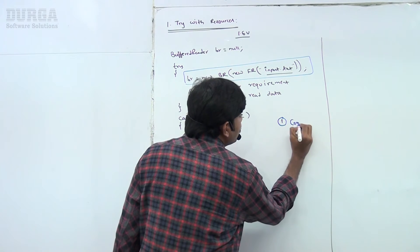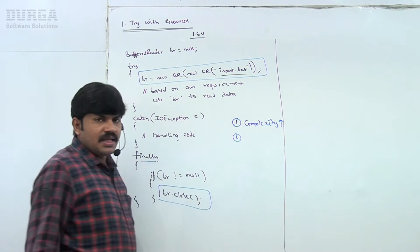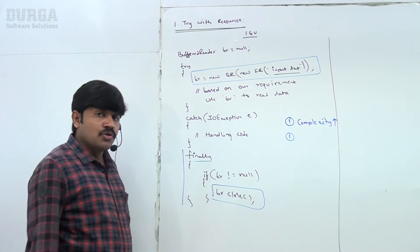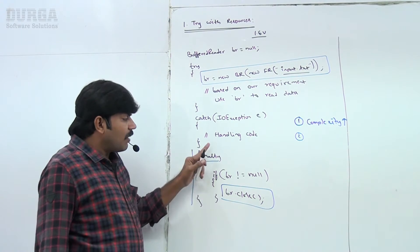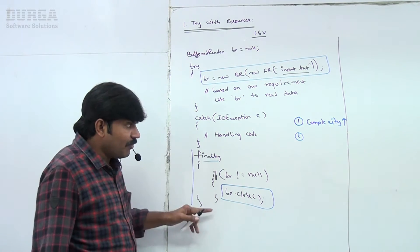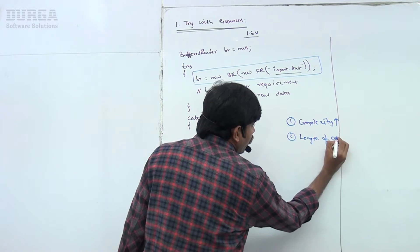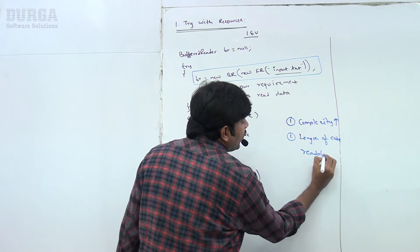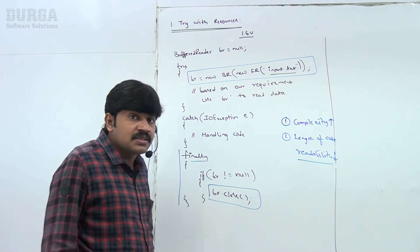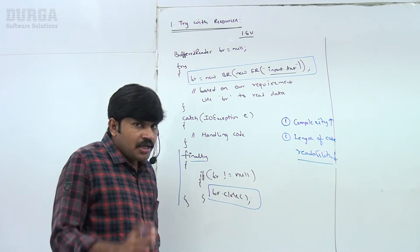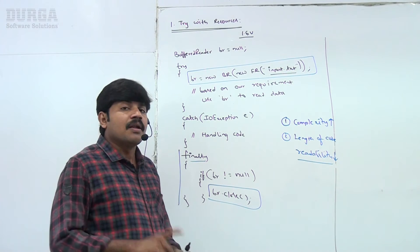We compulsorily have to write a finally block to close the resources — use-and-leave is not going to work. We must close each and every resource. This means the length of the code is going to increase, and readability by default will be down. Length of code increases, readability by default will be down. These are the two problems with the traditional approach until the 1.6 version.